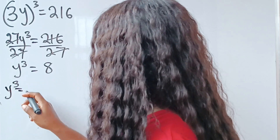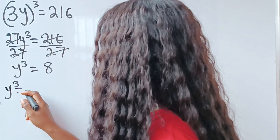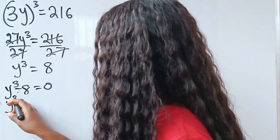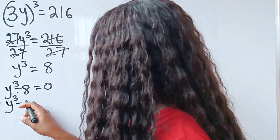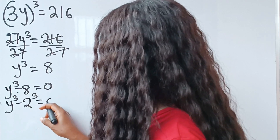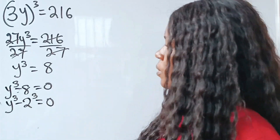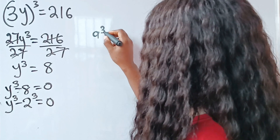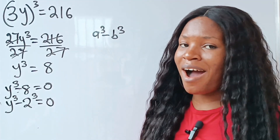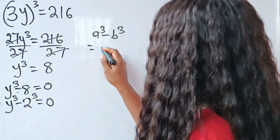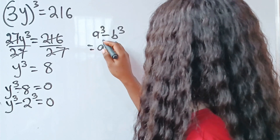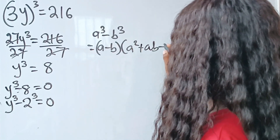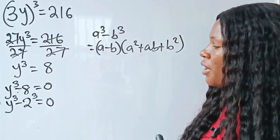We can write y³ minus 8 equals 0, which is y³ minus 2³ equals 0. Now let's recall that a³ minus b³ according to our algebra is equal to (a minus b) multiplied by (a² plus ab plus b²).